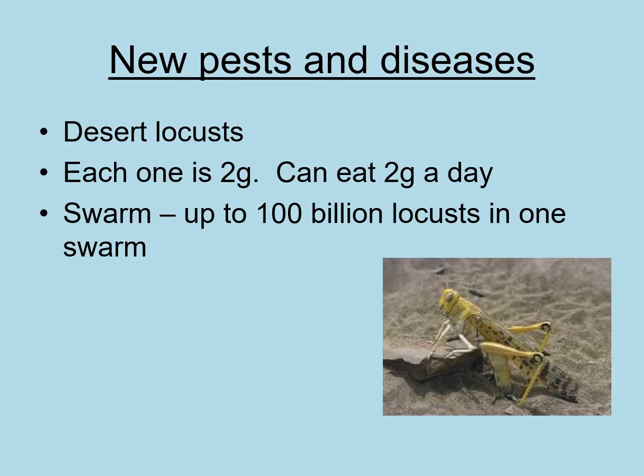Another example is desert locusts, which live in very hot countries. Their numbers have been increasing because of global warming, and they are spreading both in number and in the areas they can reach. Each desert locust weighs only about two grams but can eat two grams of crops in a day. The problem is when they swarm — a swarm can contain up to approximately 100 billion locusts.